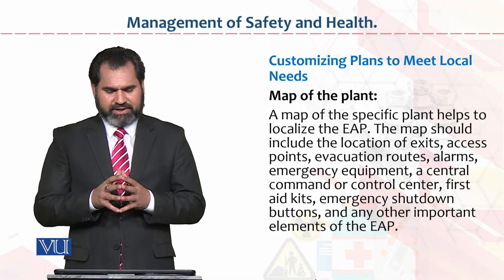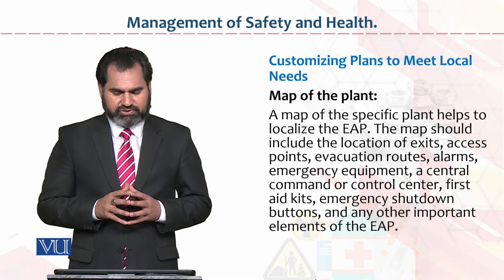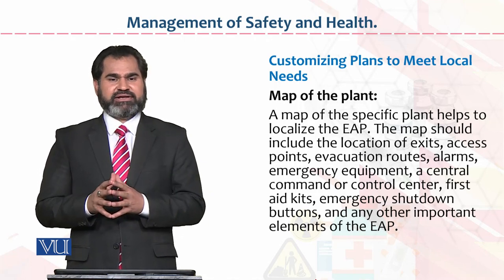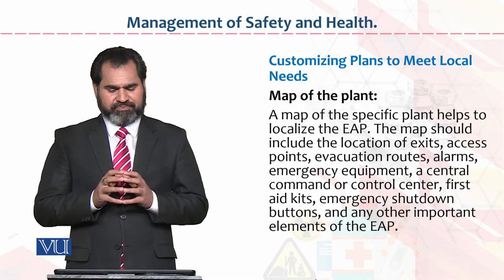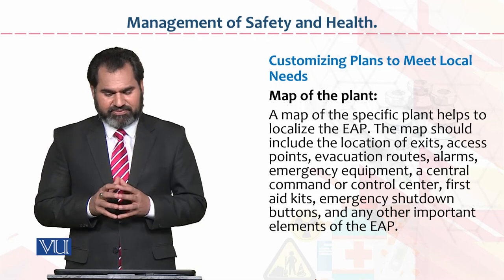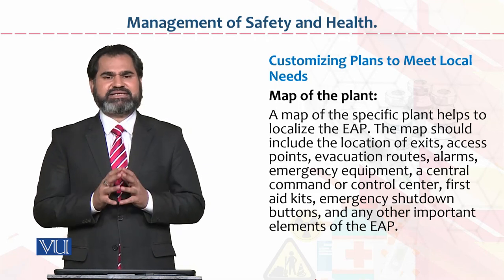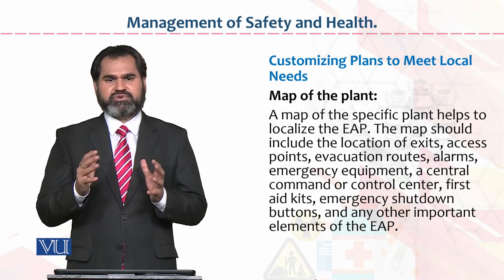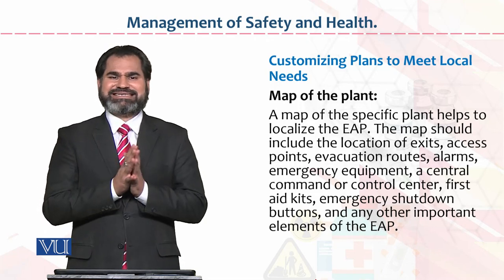Map of the plant: a map of the specific plant helps to localize the area and should include the location of exits, access points, evacuation plan, central command and control, first aid kit, emergency shutdown buttons, and any other important elements. یہ ساری چیزیں وہاں پہ displayed ہوں، employees کو communicated ہوں، اور employees کو training دی جائے تاکہ کسی قسم کی uncertain situation پیدا ہونے پر آسانی سے tackle کر سکے.